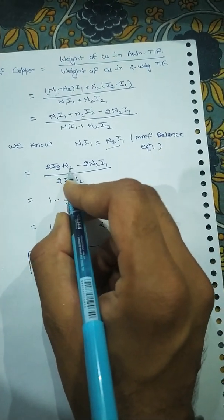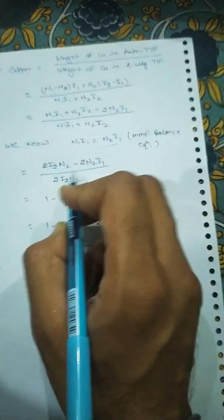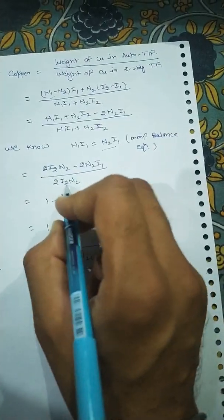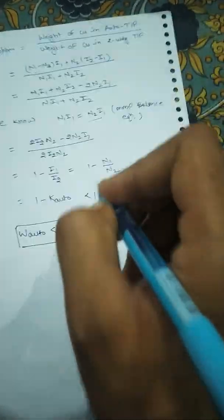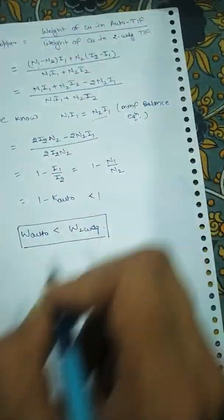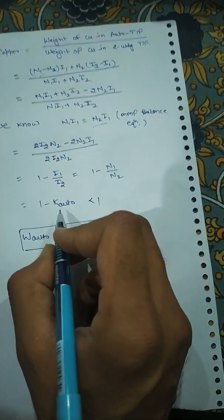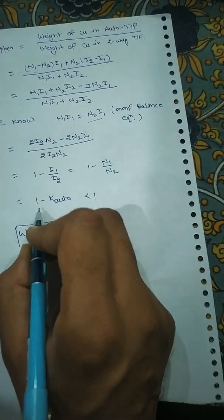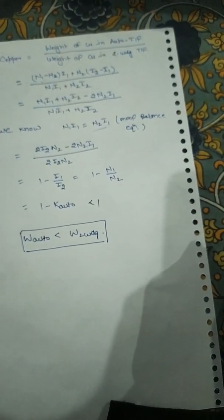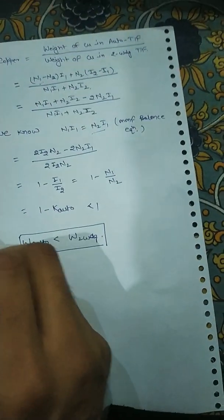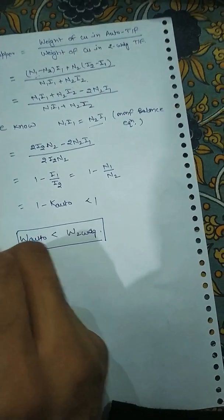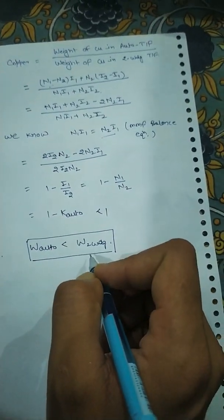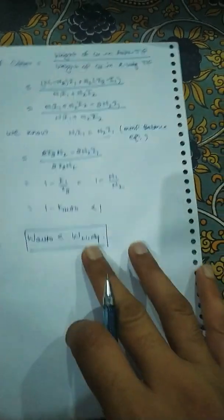Putting the MMF balance into the equation and simplifying, we get 1 minus i2/i1, which is also equal to 1 minus n1/n2. Here, n1/n2 is the turns ratio k of the auto transformer, so the copper saving equals 1 minus k. Since k for an auto transformer is always less than or equal to 1, the weight of the auto transformer winding is always less than that of the two-winding transformer.